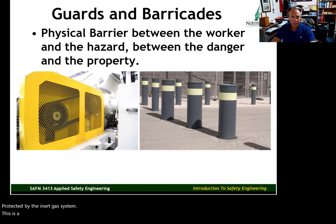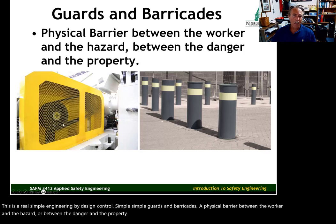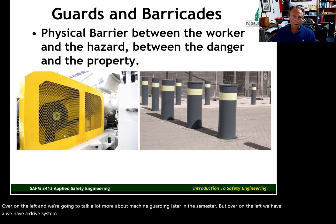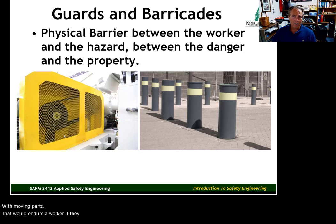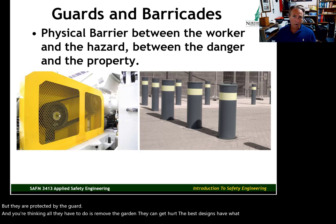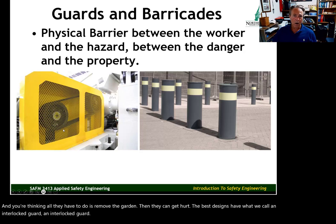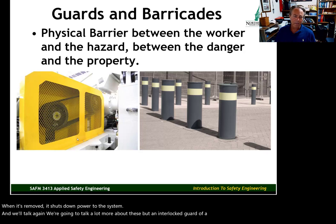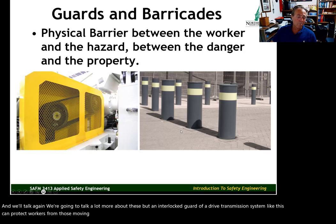A very simple engineering-by-design control is simple guards and barricades — a physical barrier between the worker and the hazard. Over on the left we have a drive system with moving parts that would injure a worker if their hand got inside, but they are protected by the guard. The best designs have what we call an interlocked guard — when the guard is removed, it shuts down power to the system. An interlocked guard on a drive transmission system can protect workers from moving parts.